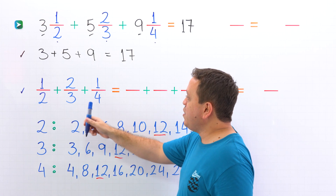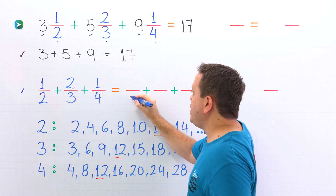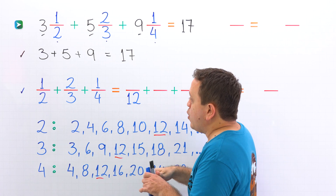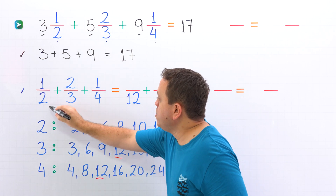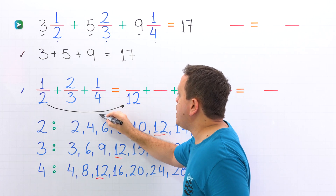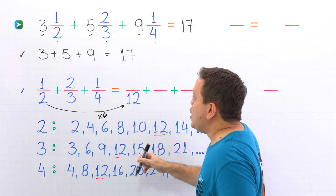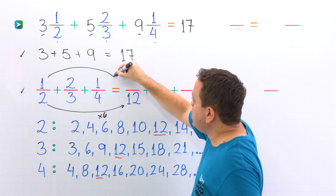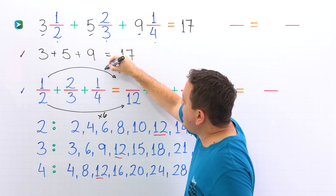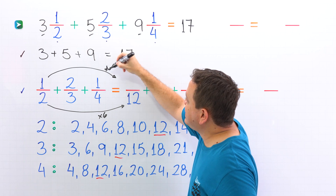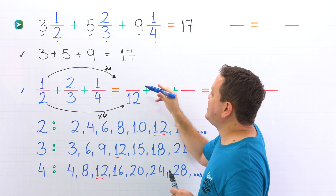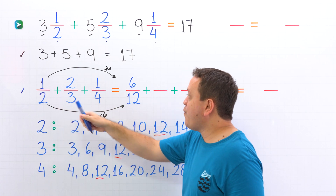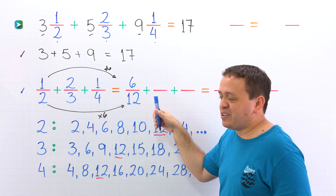So first, we are going to convert one half to an equivalent fraction with denominator twelve. By what number should we multiply two to get twelve? By six. Whatever we do to the bottom, we must do to the top. So we multiply one by six, and one times six is six. Instead of working with one half, we are going to work with six twelfths.